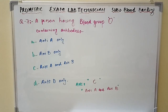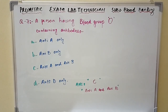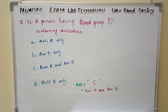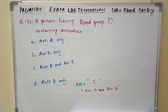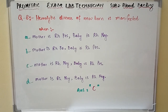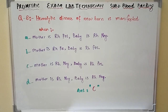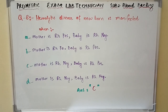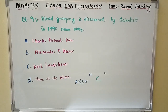Question number seven: A person having blood group O containing antibodies — the answer is Option C: anti-A and anti-B. Question number eight: Hemolytic disease of newborn is manifested when — the answer is Option C: mother is Rh negative, baby is Rh positive.